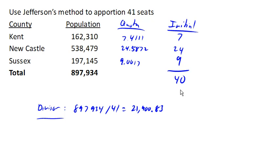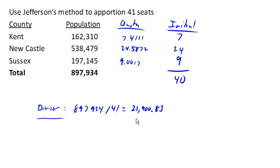In this case, you'll notice that we haven't allocated all the seats. So to adjust for that, we're going to use a different approach than Hamilton used. Instead of adjusting based on these quota results, we're going to change the divisor. In order to get more allocated, we're going to need to lower the divisor — a new divisor.